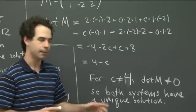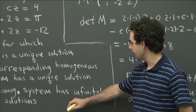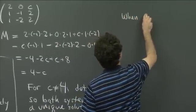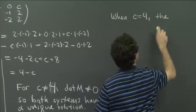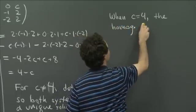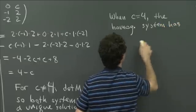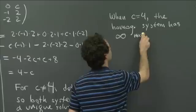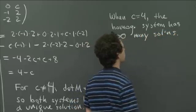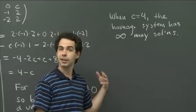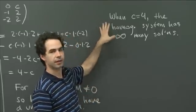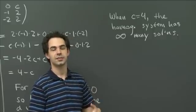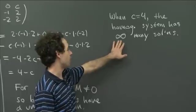When c equals 4, we're in the case where the determinant is 0. In that case, the homogeneous system has infinitely many solutions. We know it's infinitely many — not zero solutions — because the homogeneous system always has the trivial solution where everything equals 0.